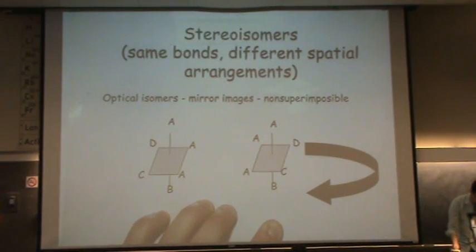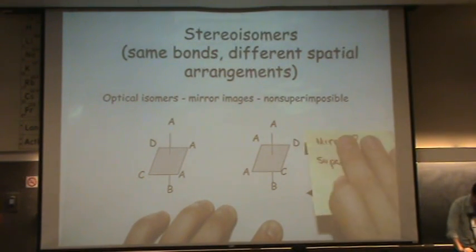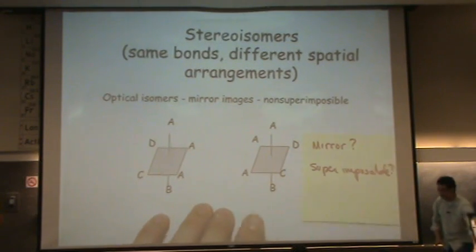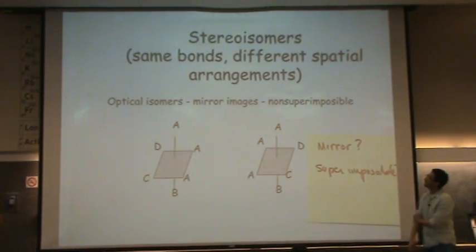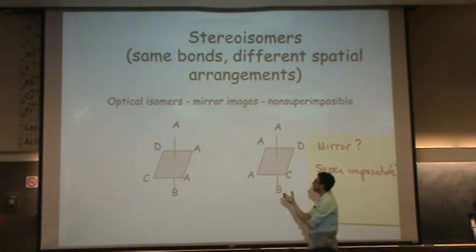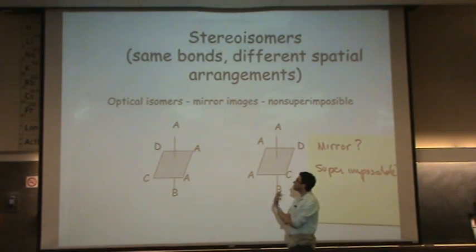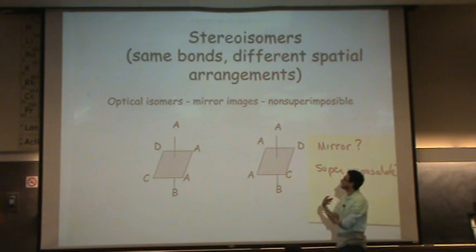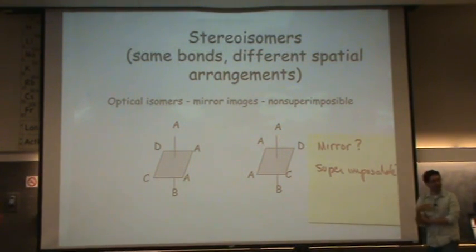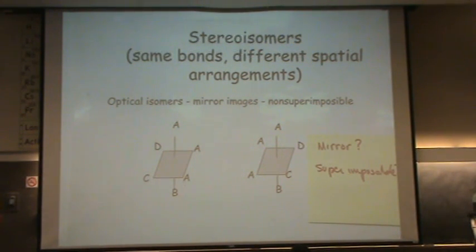There's nothing much here — it's just an arrow, they're just the same. So when you spin it around, you're going to find that these two are optical isomers. They're optical isomers.